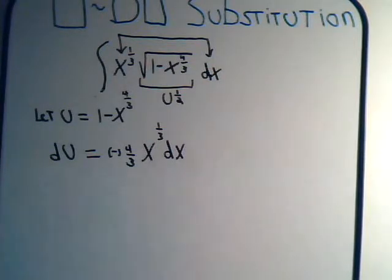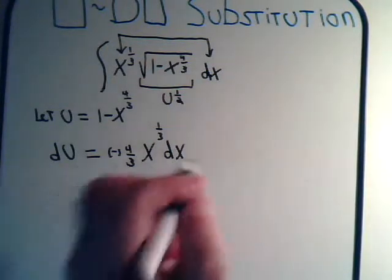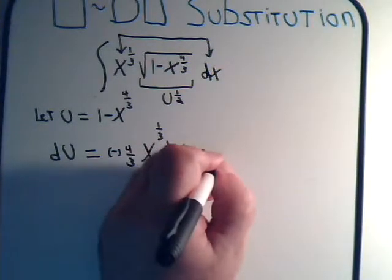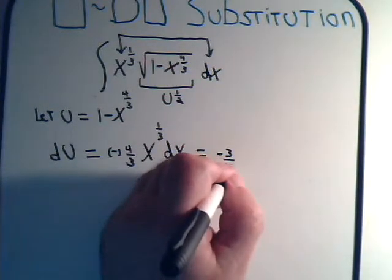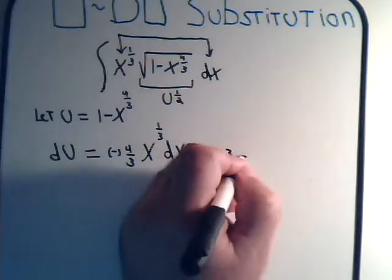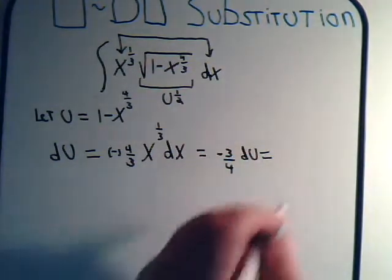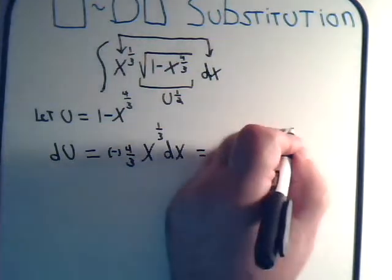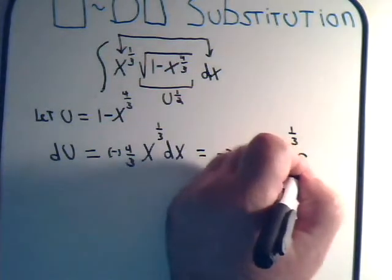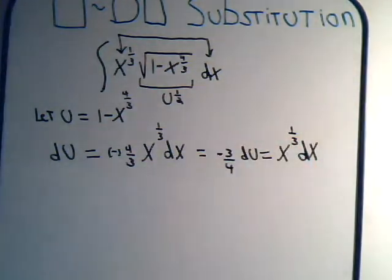And of course, we have a minus 4/3 here, but that's no problem. We would just say, in this case, that minus 3/4 times du equals x to the 1/3 dx.